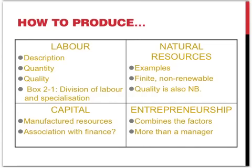On the side of natural resources, the examples are typically mineral resources, farmland, or marine resources. These resources are whatever nature gives us that we can use in the production process. They are, however, finite and often non-renewable, which means that their quality is also important.